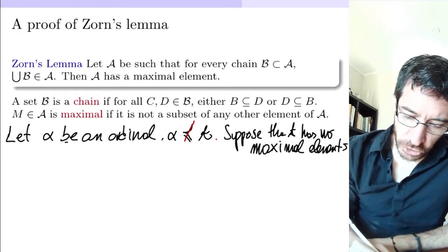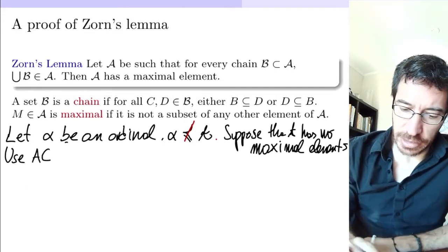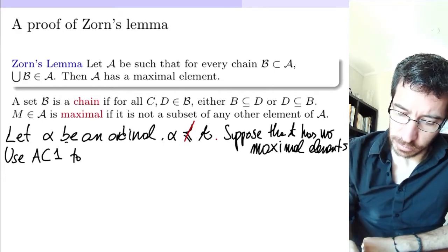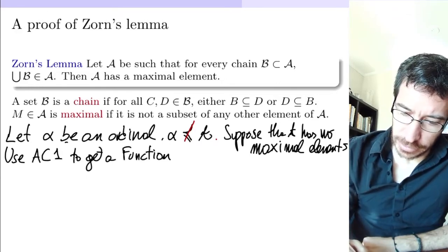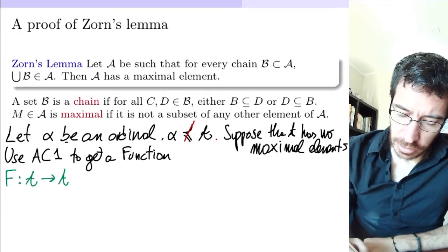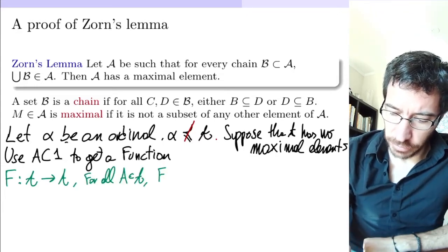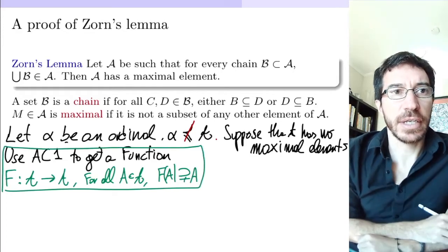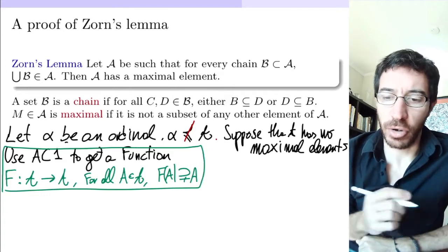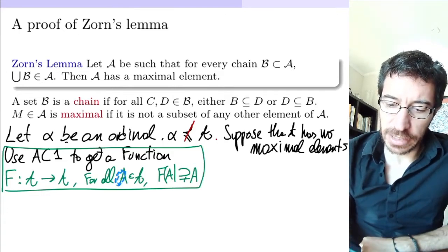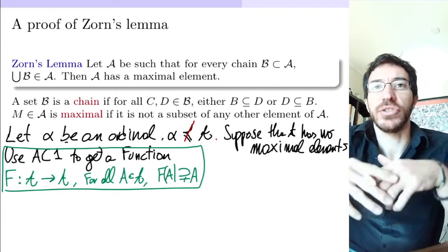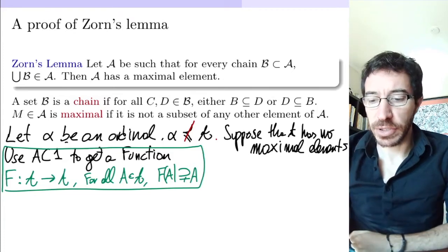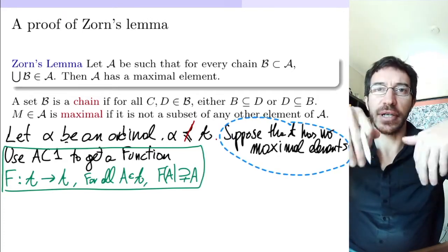So how are we going to use the axiom of choice? We use part one of the axiom of choice to get a function F from A to A such that for all lowercase a in A, F(a) is a proper extension of a. The axiom of choice is going to give us such a function. We know that A has no maximal elements, so for every set inside there is a proper extension. Being maximal means there is no bigger set within the collection. So our assumption that there are no maximal elements means for every set that belongs to the collection, there is one that is strictly bigger.